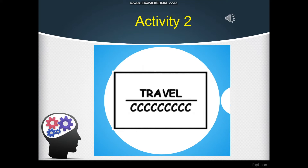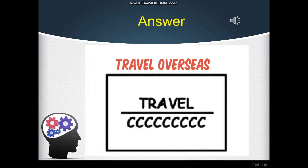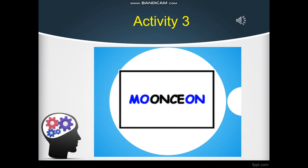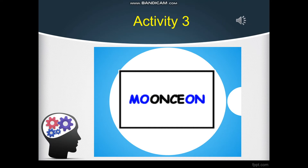Next, we have the word 'travel' and multiple C's — can you think of a word? The answer is 'travel overseas.' Then we have M, O, and 'once' and 'on' — can you think of a word connected to this?